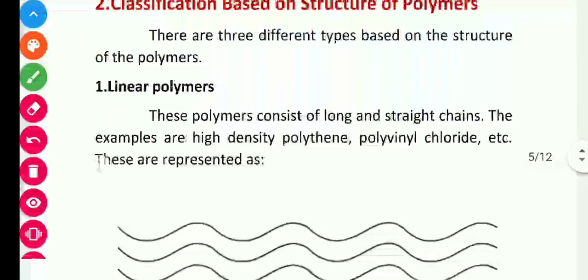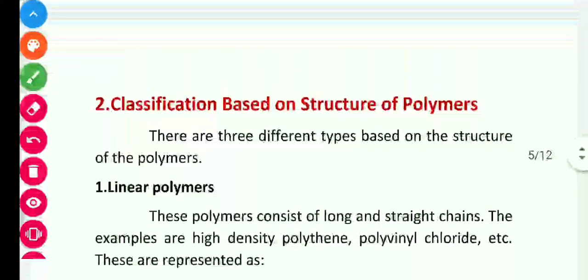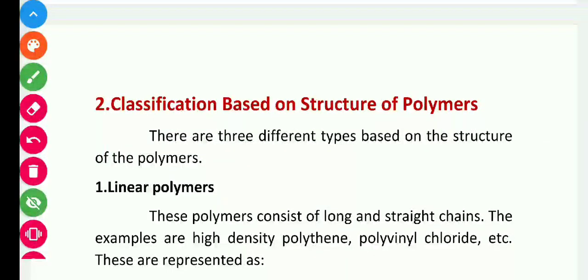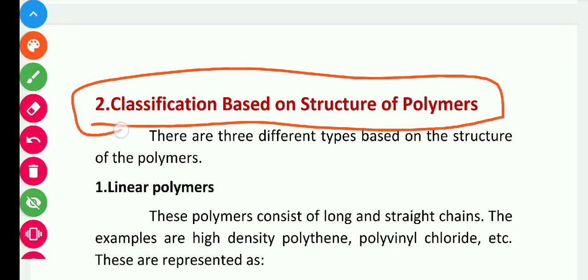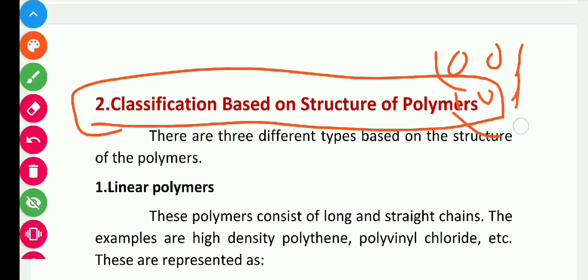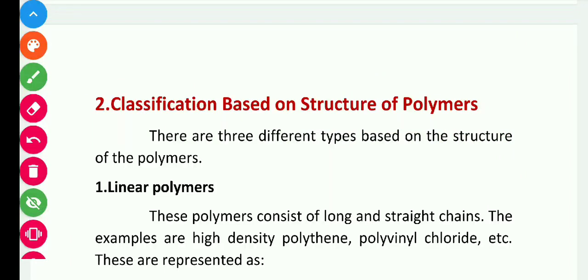So, based on the structure of polymers, there are three different types: linear polymers, branched chain polymers, and cross-linked or network polymers. You need to remember this — it is very important. While reading, read it twice. The remaining classification will be explained in the next pre-recorded video. We'll see you in the next video.